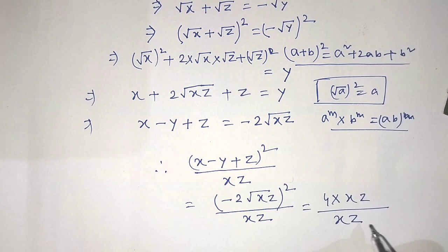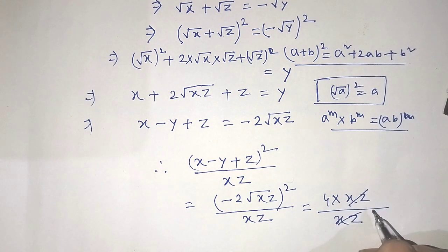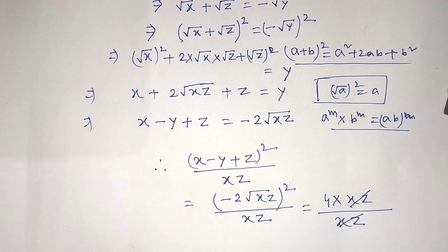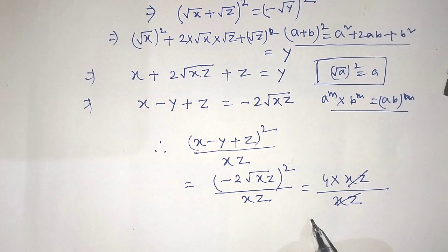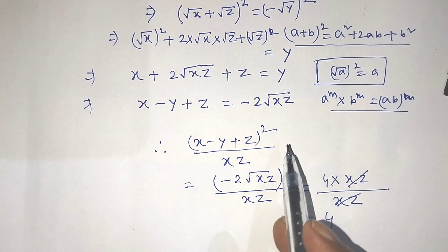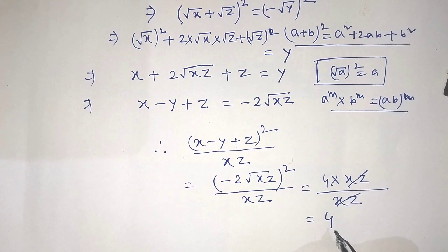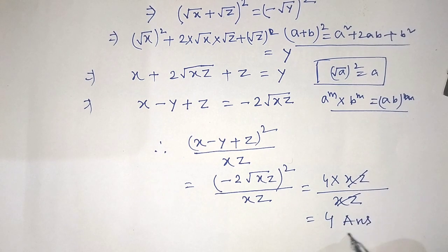Now we can cancel xz from the numerator and denominator in this fraction. So we can write 4. The value of this algebraic expression is 4 — this is our final answer.